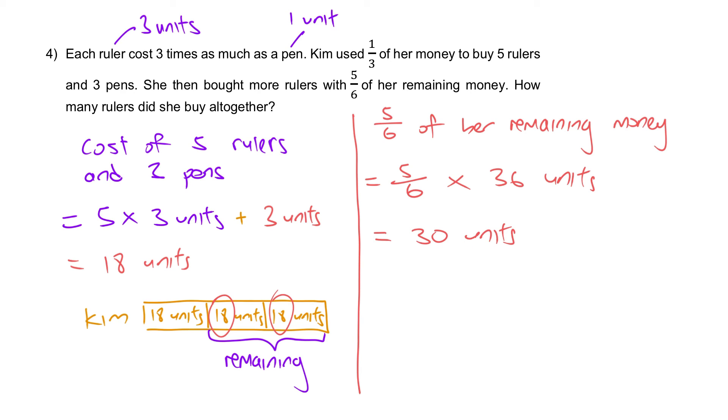So we go straight to the answer. Number of rulers she bought altogether would be equal to 30 divided by 3, that gives you 10. However, this is not the final answer because the question is asking you how many rulers did she buy altogether.